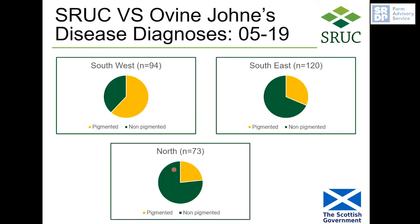Post-mortem data shows variations in different regions of Scotland. In one dataset of 94 sheep with Johne's disease, the yellow section represents pigmented cases and the green section non-pigmented cases. Pigmented strains tend to test more positive in blood and faecal tests and are less likely to infect cattle — useful to know for choosing tests and managing grazing to protect cattle, particularly if cattle are in a health scheme. In a northern Scotland dataset of 73 sheep, a much bigger proportion were the non-pigmented types.